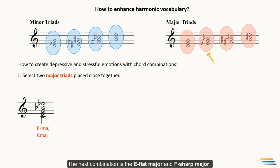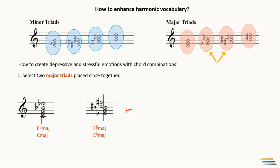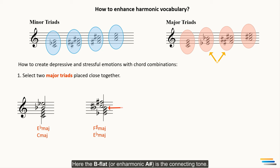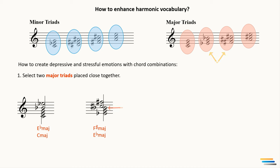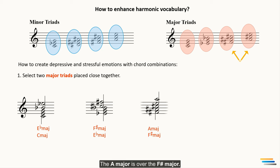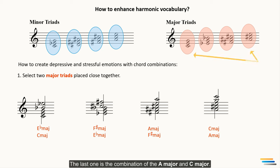The next combination is E flat major and F sharp major. Here the B flat — or enharmonic A sharp — is the connecting tone. Then A major is placed over F sharp major. The last one is the combination of A major and C major.